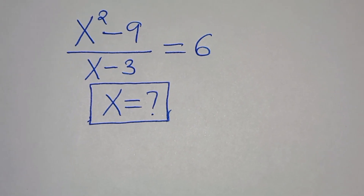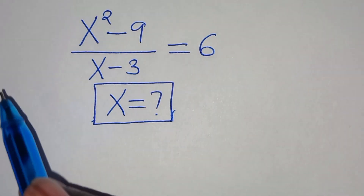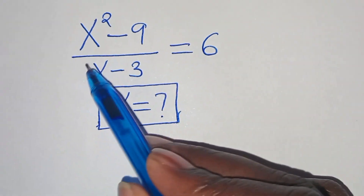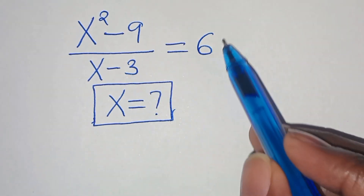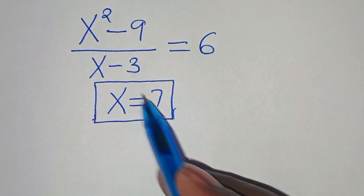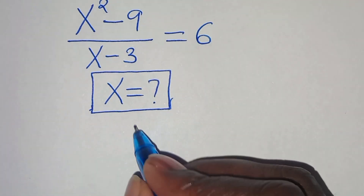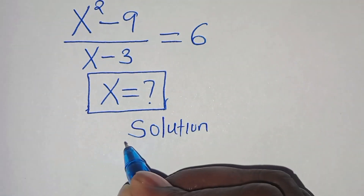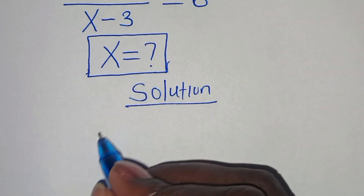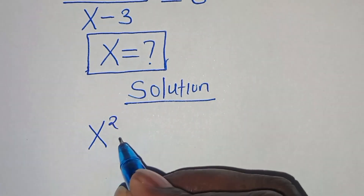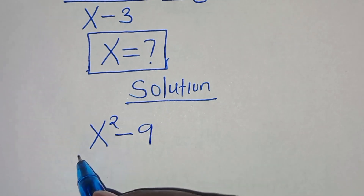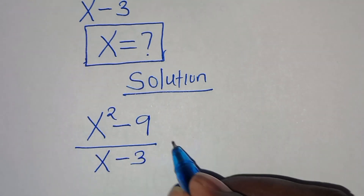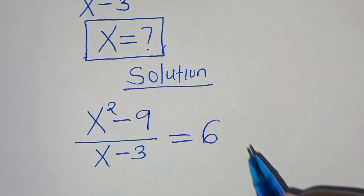Hello everyone, you're welcome to solve this nice algebra problem: x squared minus 9 divided by x minus 3, this is equal to 6. So what is the value of x? Now let's provide a solution. We have x squared minus 9 divided by x minus 3, this is equal to 6.